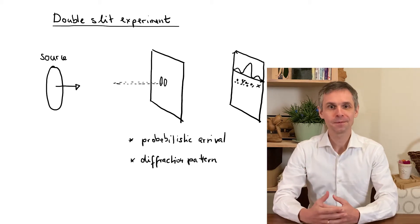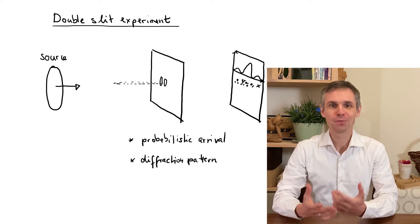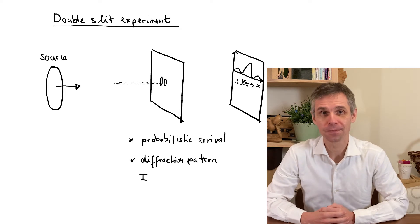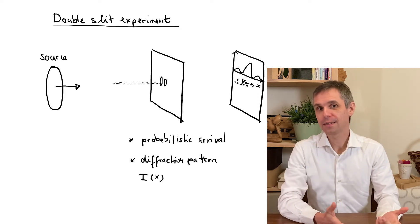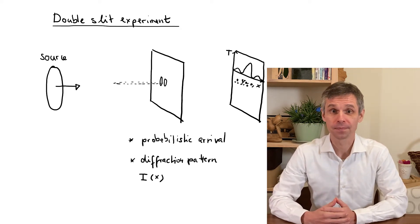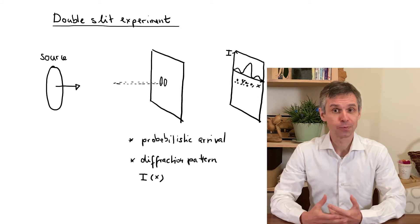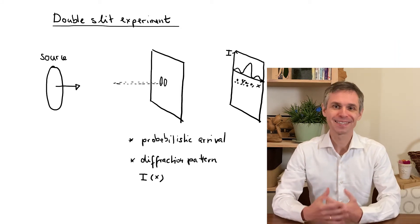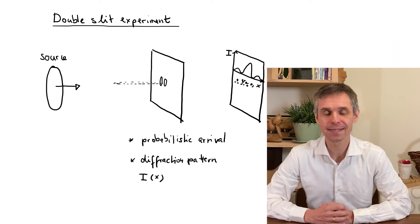Now if we were dealing with a wave, the diffraction pattern here would map out the intensity of the wave—say here, the intensity along the x direction. But what we see is that in this experiment, this does not really represent an intensity.